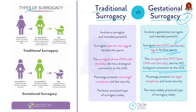In most cases, at least one intended parent is genetically related to the child, and the surrogate is not related in any case. This makes gestational surrogacy less legally complicated than other forms of surrogacy.